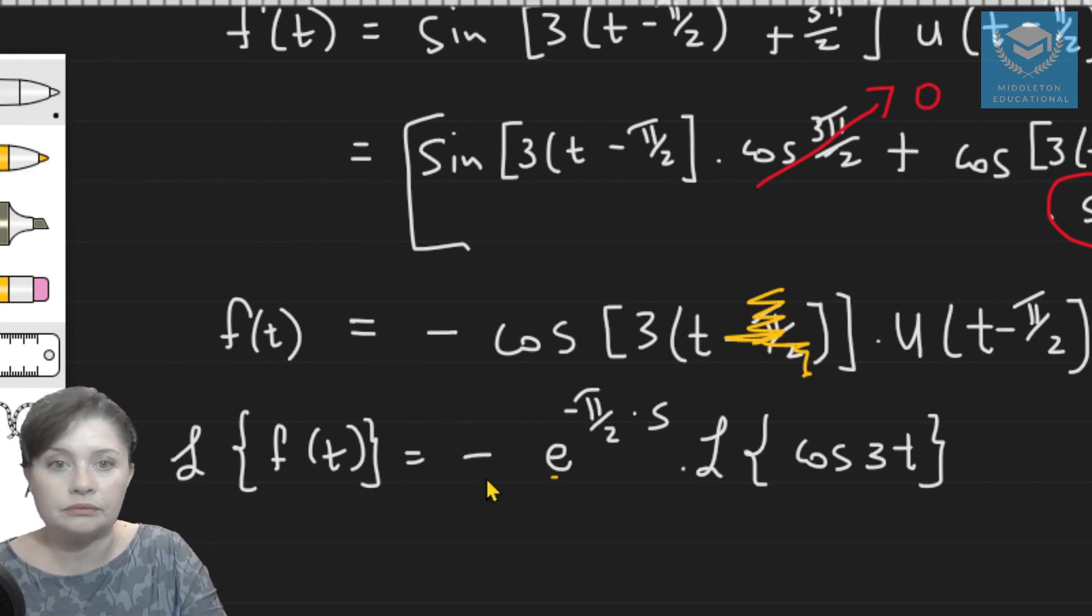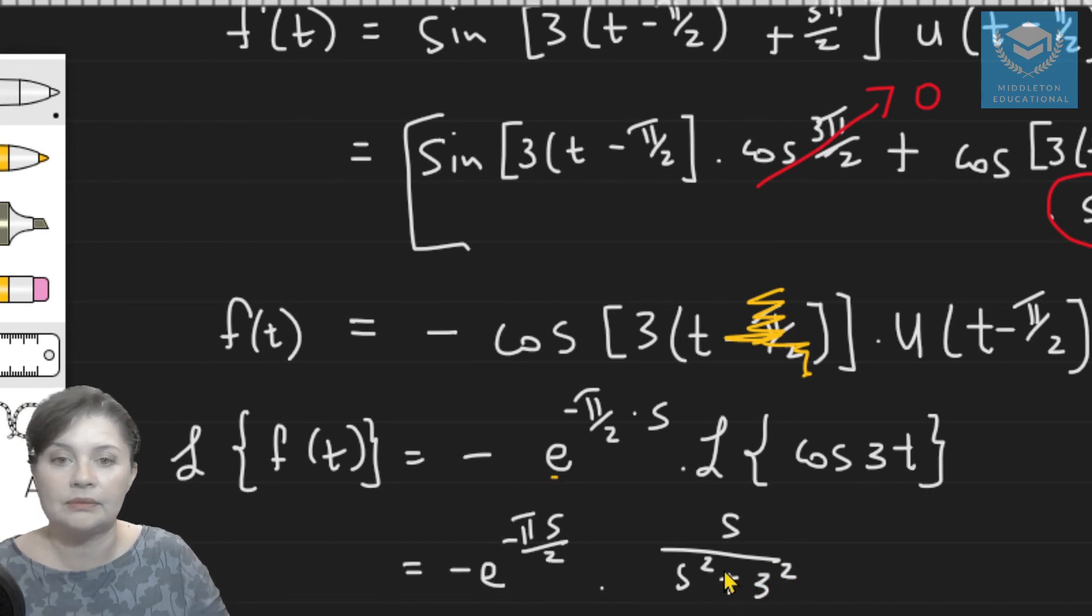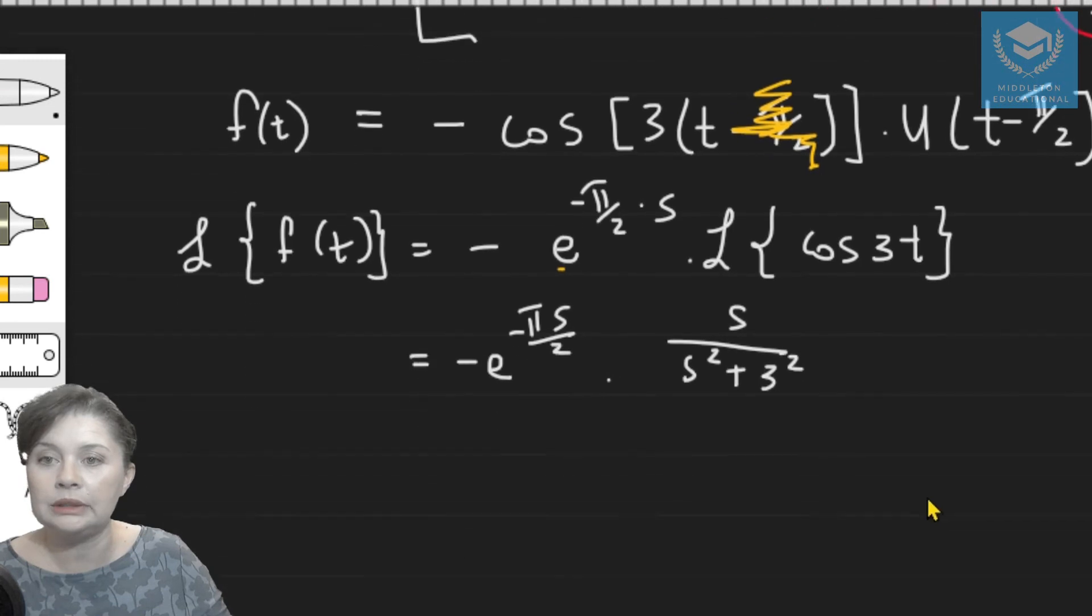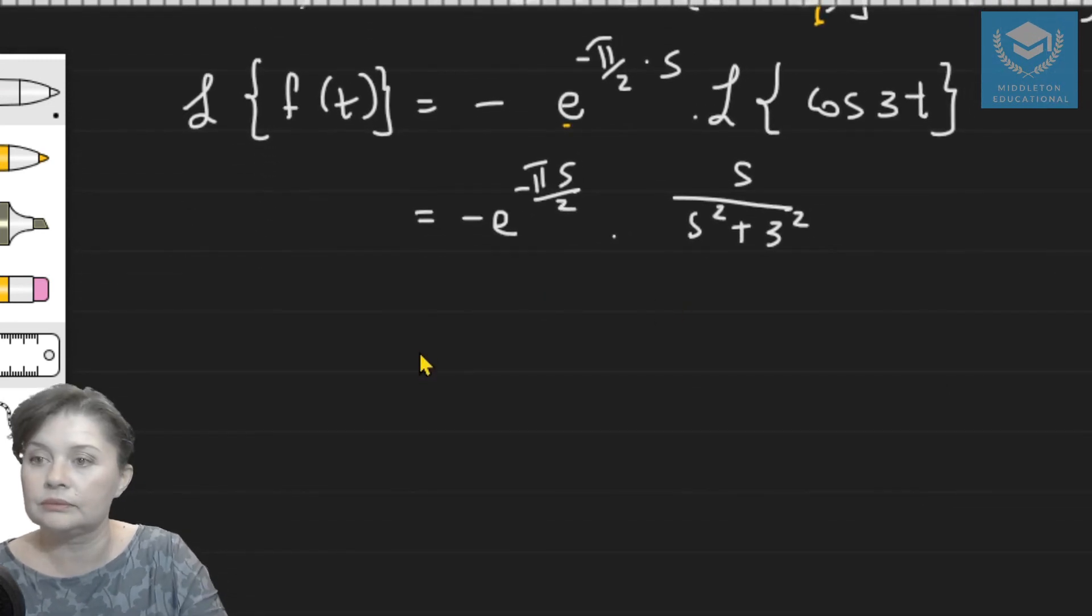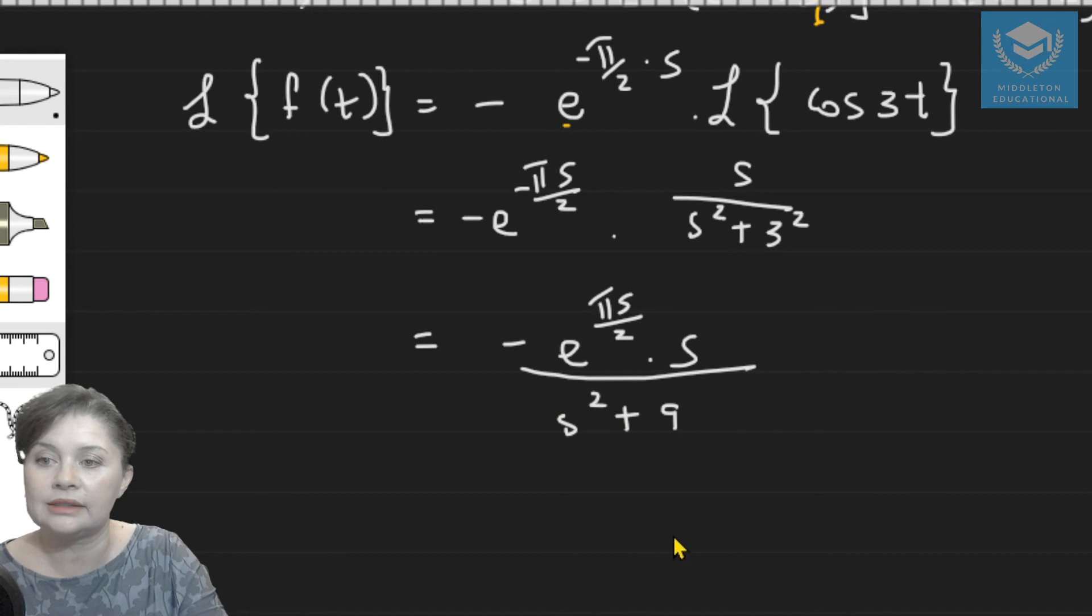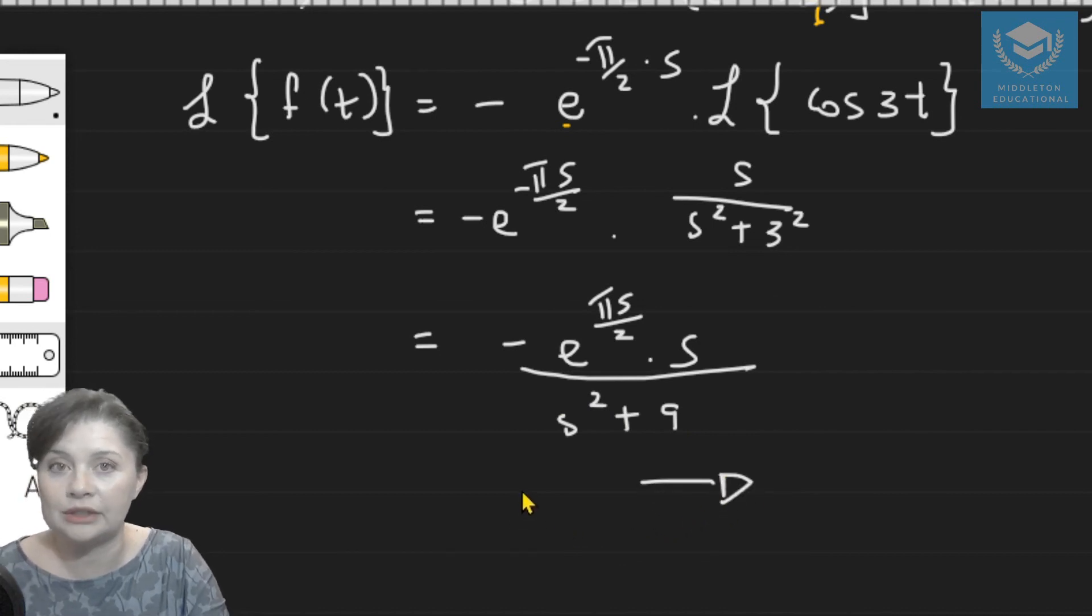So then we'll have minus e to the power of minus pi s over 2 times s over (s squared plus 3 squared). And if I just neaten that up a bit, that is going to be minus e to the power of minus pi s over 2 times s over (s squared plus 9). And that is your Laplace transform.